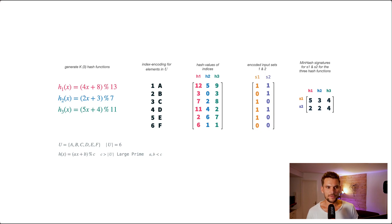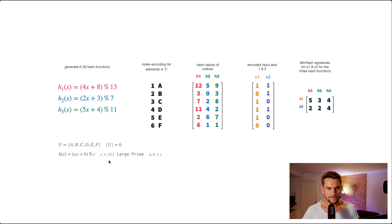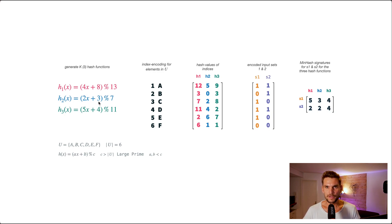The minhashing algorithm generates k hash functions — in this case three — using a formula with parameters a, b, and c, where c must be larger than the universe size and be a prime number, and a and b must be smaller than c. These hash functions generate k permutations of our indices. We use the hash functions to generate randomness in the permutations.